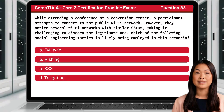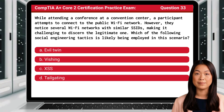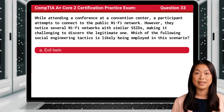Question 33. While attending a conference at a convention center, a participant attempts to connect to the public Wi-Fi network. However, they notice several Wi-Fi networks with similar SSIDs, making it challenging to discern the legitimate one. Which of the following social engineering tactics is likely being employed in this scenario? The answer is A: Evil Twin.